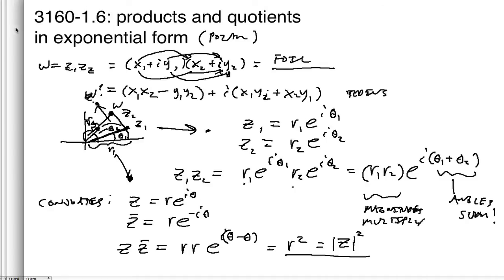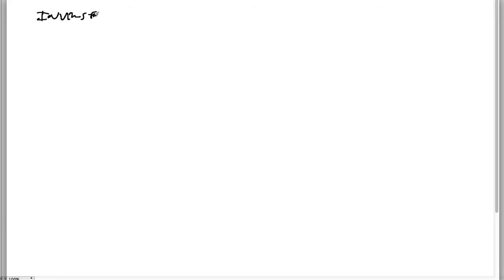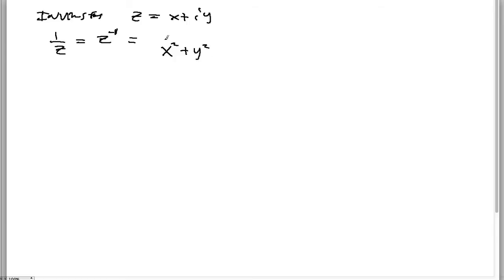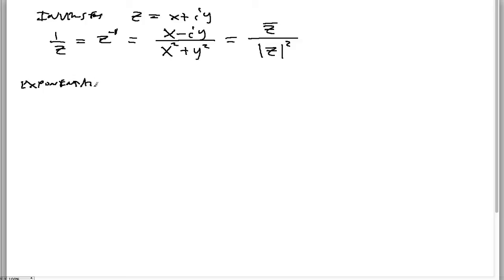Let's go over inverses. In rectangular form, if z equals x plus iy, then 1/z equals (x minus iy) over (x² plus y²), which we can write more compactly as z-bar over |z|². That's a lot to memorize, so let's see if we can find a better way using polar or exponential form.